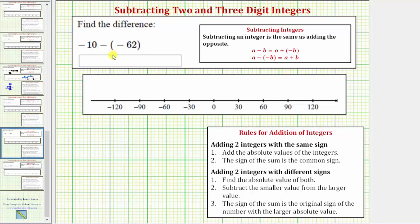We can write this difference as a sum because subtracting an integer is the same as adding the opposite. This means subtracting -b is the same as adding +b, and therefore subtracting -62 is the same as adding +62.